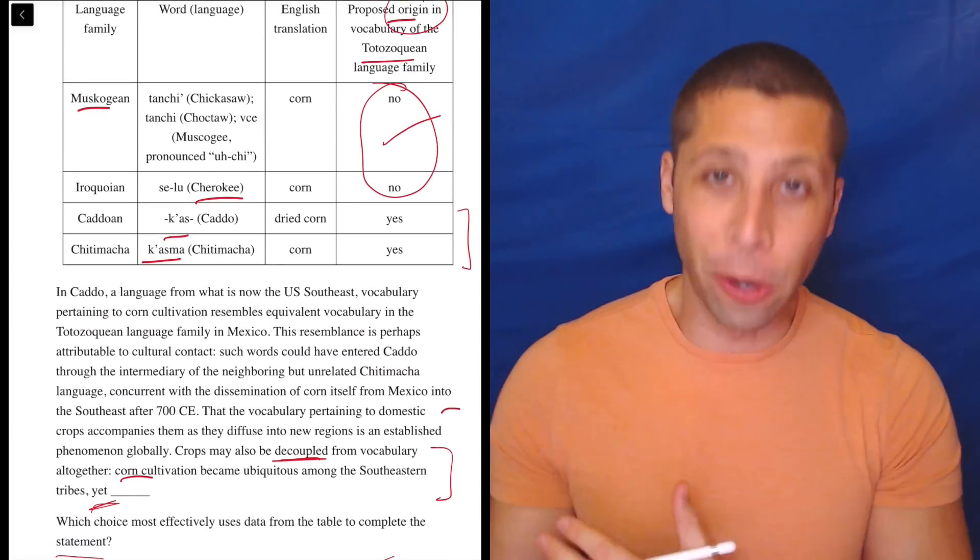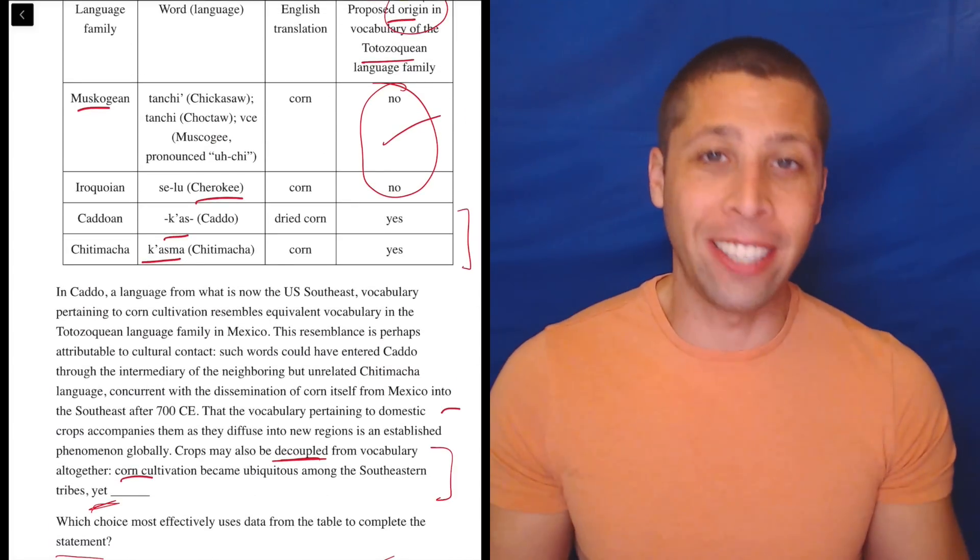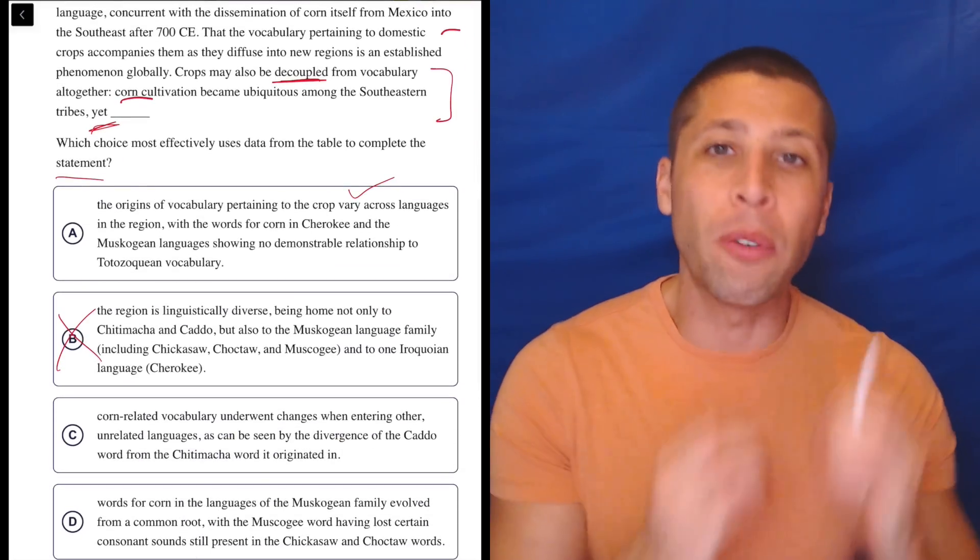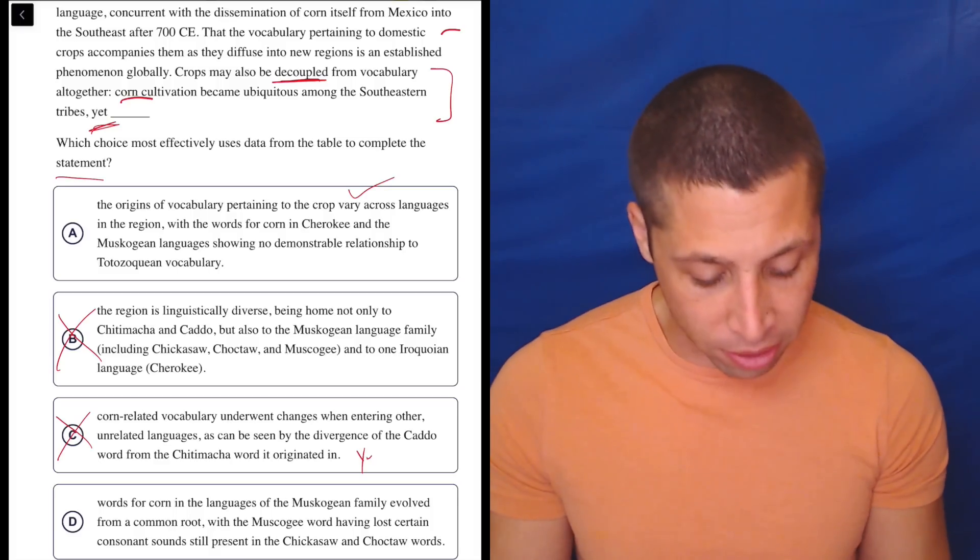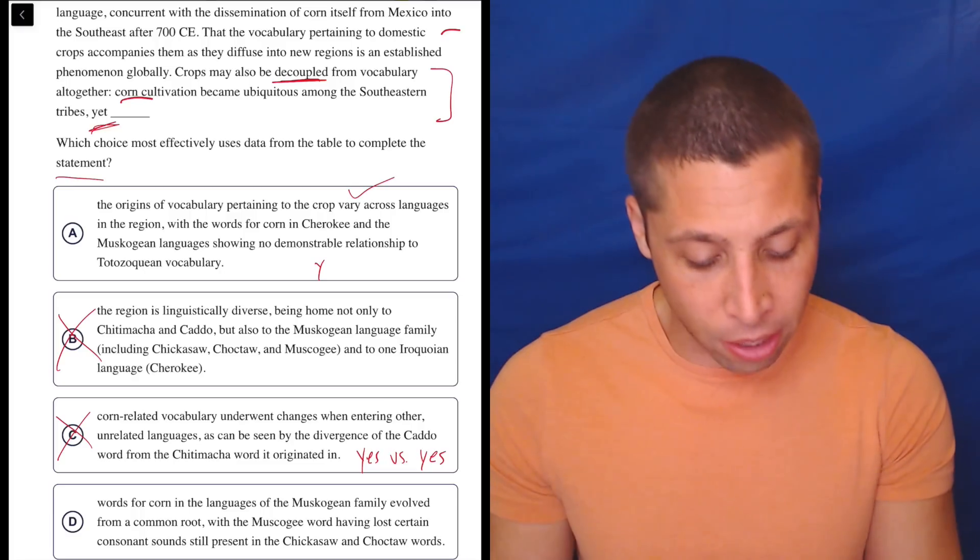So this is just kind of reiterating that two different languages are using the original Tadozoquian word for corn, except maybe they have slightly different pronunciations of that word. But we're trying to move away from that. We're basically trying to contrast the yeses and the no. This is just contrasting the yes versus the yes. That's not great.